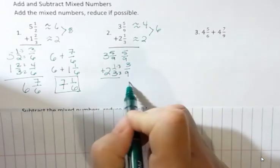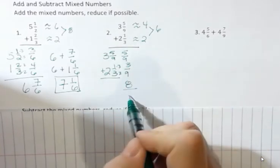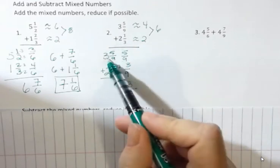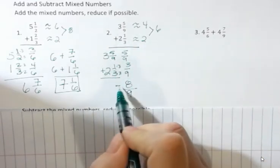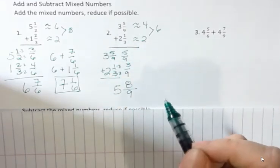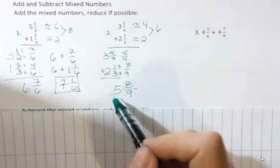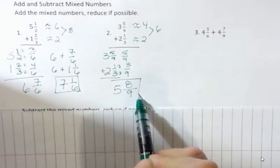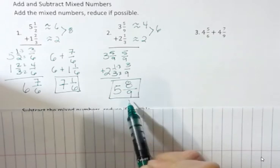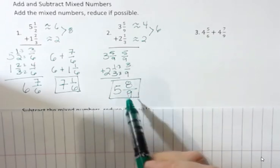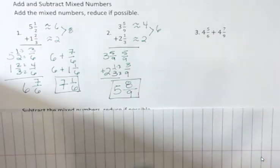Now I'm going to add those together. Five and three is eight. The denominator stays the same. Three plus two is five. So five and eight ninths. That one is okay because eight ninths is a proper fraction. The smaller number is on top and there's no common factor. So we're done with that one.